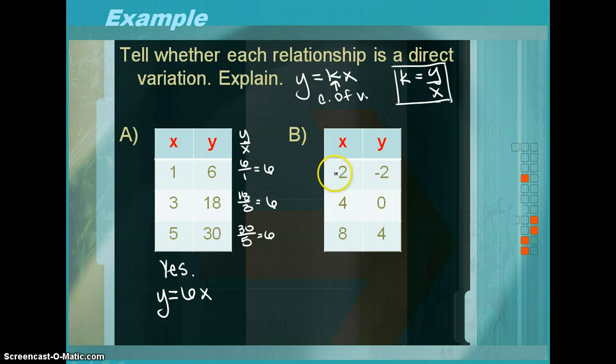Now for b. Again, we're going to find all of the y divided by x's. So negative 2 divided by 2 is equal to negative 1. 0 divided by 4 is equal to 0. So already they don't match, so you can stop and write no. This is not a direct variation.